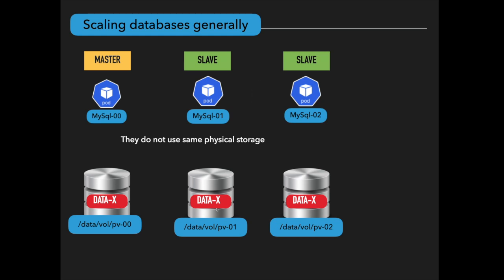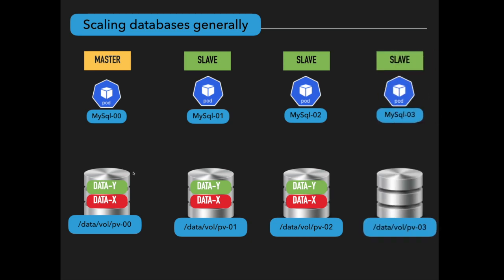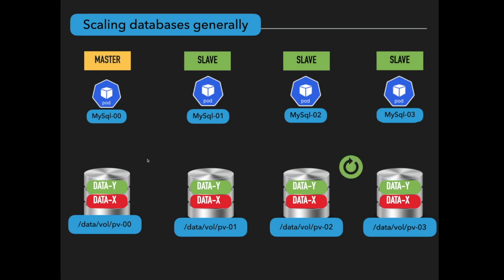Since the master is the only one that can change the data, the slaves need to take care of their own data storage. The slaves must know about any changes so they can update their own storage to be up to date for the next query request. When a new slave pod replica joins the existing setup, it also has to synchronize data from its previous pod. The new pod creates its own data storage and first clones the data from the previous pod — not from any other pod — then starts synchronizing the data continuously.